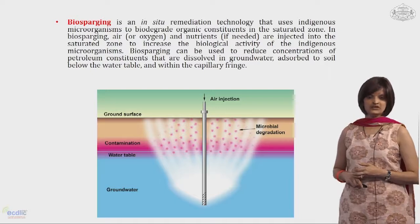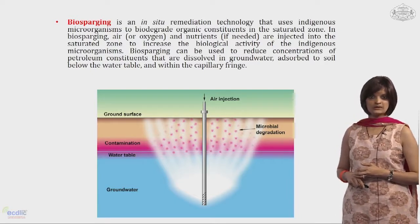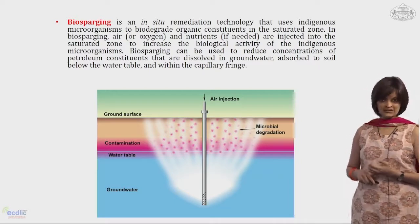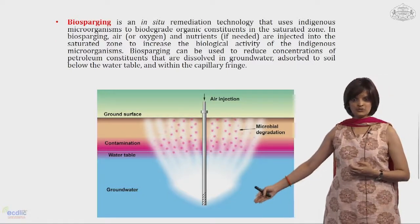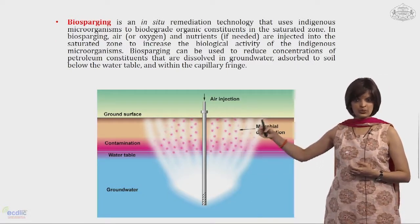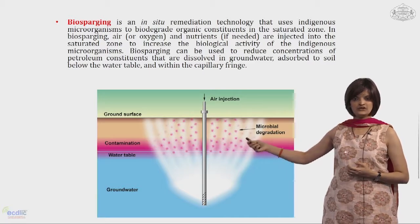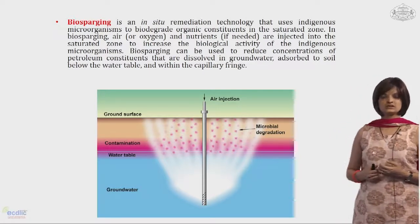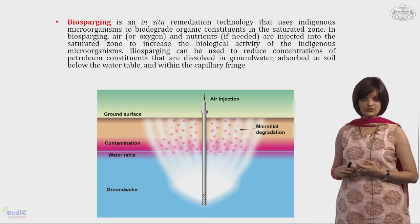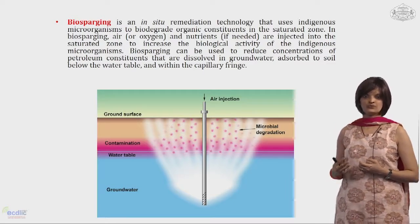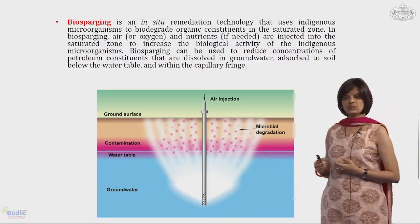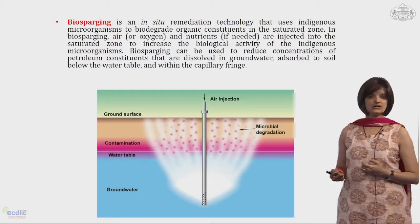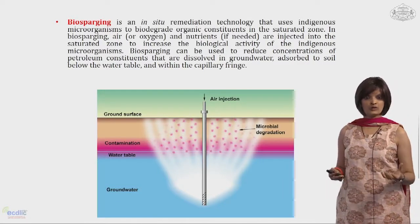Another way of treating groundwater is biosparging — also an in-situ remediation technology. The principle is to inject air from the bottom so it sparges upward. The middle is the contamination zone where microbial degradation is happening. This technology is used for saturated zones to increase the biological activity of indigenous microorganisms. Biosparging can be used to reduce the concentration of petroleum hydrocarbons dissolved in groundwater or adsorbed onto soil surfaces.